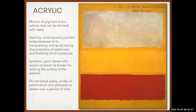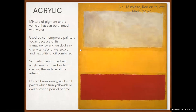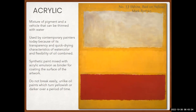Another medium is acrylic — a mixture of pigments and a vehicle that can be thinned with water. It is used by contemporary painters today because of its transparency and quick-drying characteristics of watercolor, combined with the flexibility of oil. Acrylic is synthetic paint mixed with acrylic emulsion as a binder for coating the surface of the artwork. It does not break easily, unlike oil paints which can turn yellowish or darker over time.